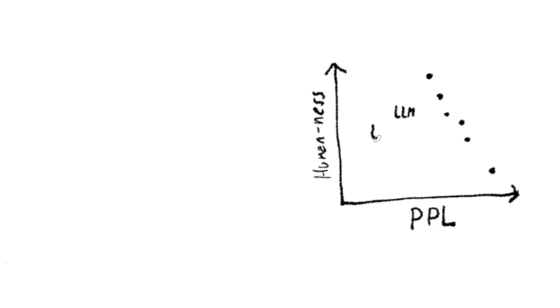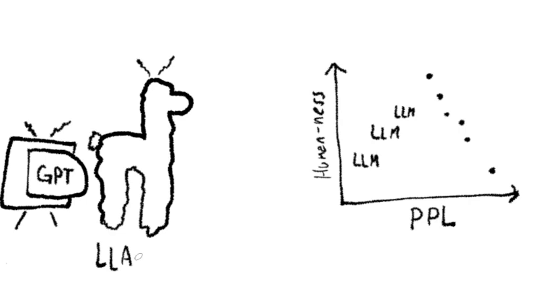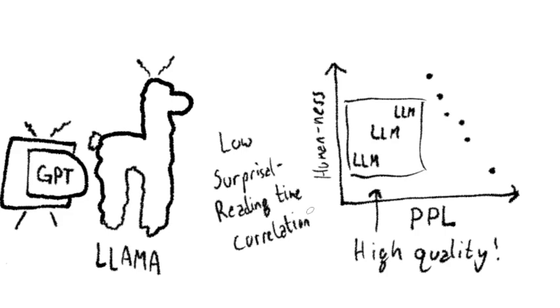New research in the past year has shown that the large language models, like ChatGPT and Llama, are not very good predictors of reading time. This implies that, despite these large language models sounding much more human, their quality is very high. They do not predict how humans process language.